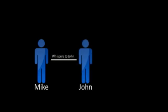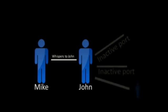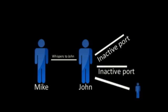Here's Mike again. His social network is getting a bit crowded. His biggest issue is actually John. This is because John has too many inactive VLANs. His ports aren't being used, so he's not communicating effectively, and he's sucking up bandwidth.